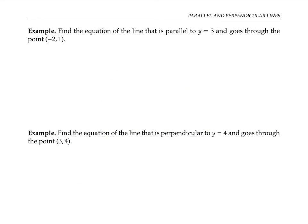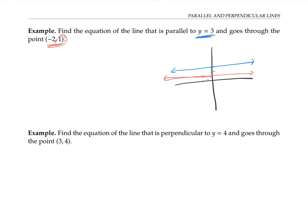These next two examples are a little different because we're looking at lines parallel or perpendicular to completely horizontal lines. The line y = 3 is a horizontal line at height y equals three. If I want a line parallel to this, it will also be a horizontal line. Since it goes through the point negative two, one, it will always have a y coordinate of one. So my answer is y = 1.